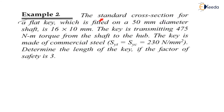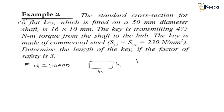The question is: the standard cross section for the flat key fitted on a 50 mm diameter shaft. The cross section of the flat key is B × H, which is 16 × 10 mm.